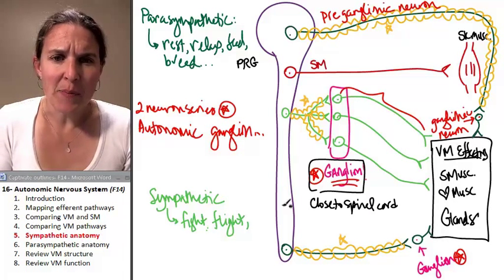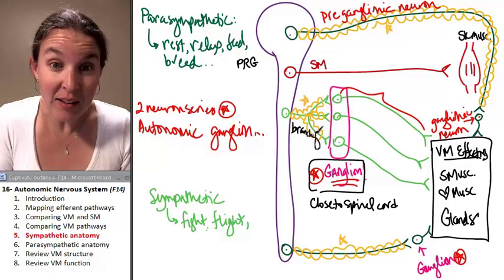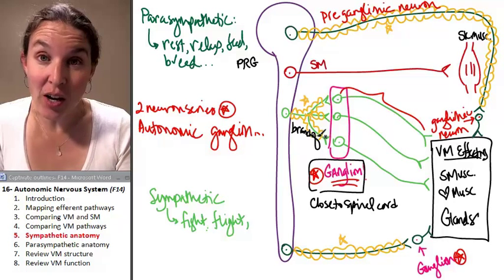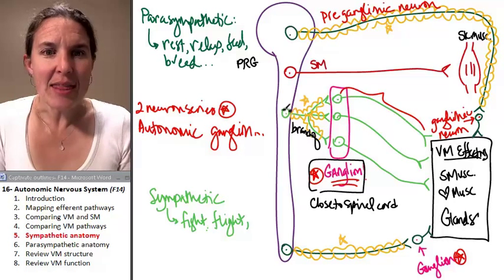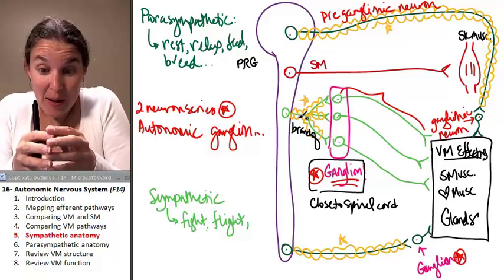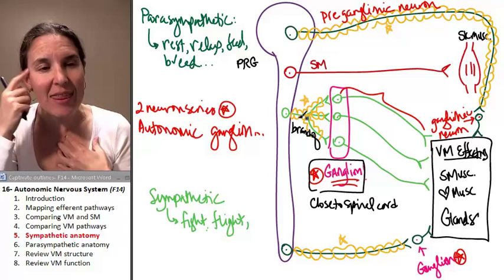Something else that you notice: holy branching preganglionic neuron. Look at this thing. The preganglionic neuron, its axon actually branches out and heads in many different directions. Think about that.